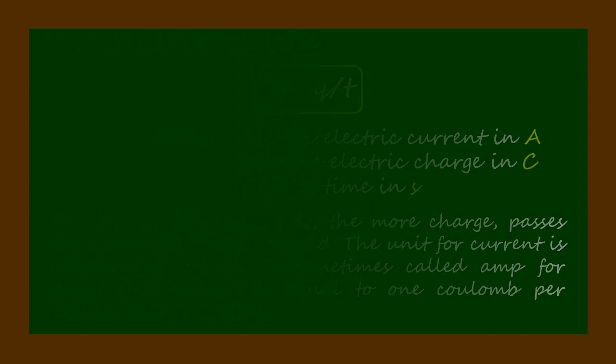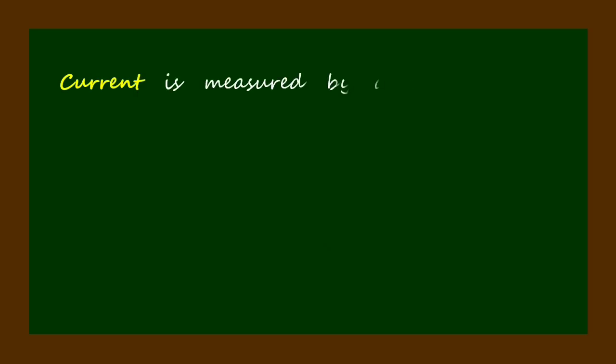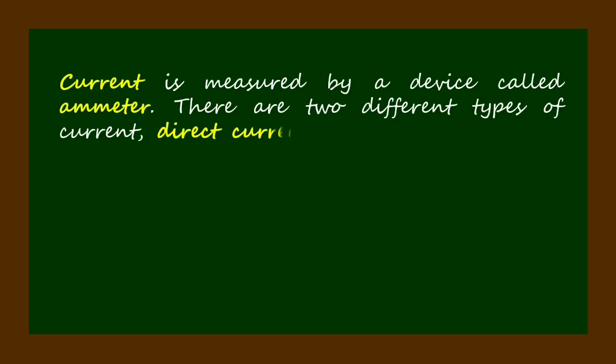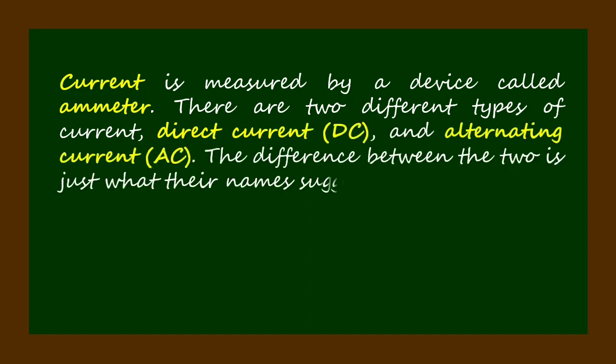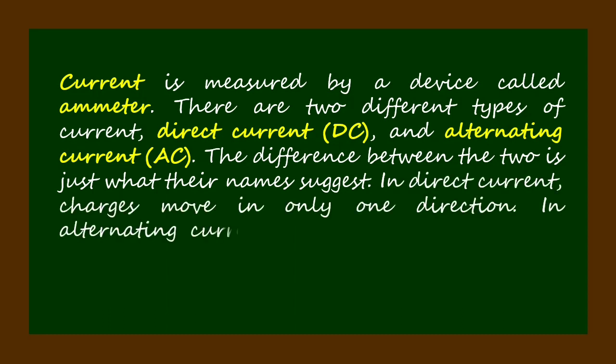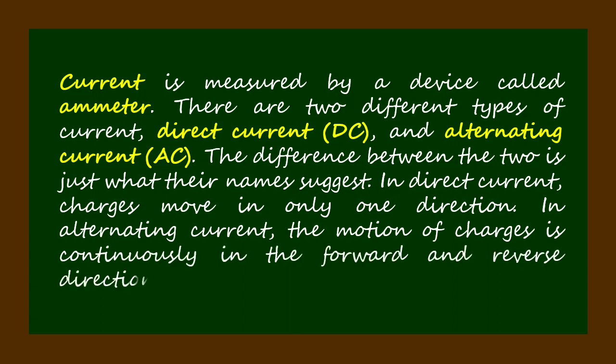There are two different types of current: direct current (DC) and alternating current (AC). The difference between the two is just what their names suggest. In direct current, charges move in only one direction. In alternating current, the motion of charges is continuously in the forward and reverse direction.